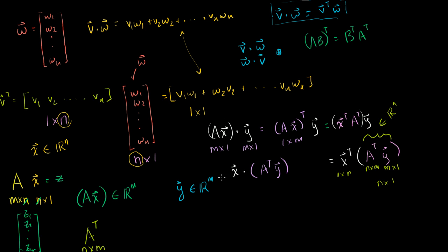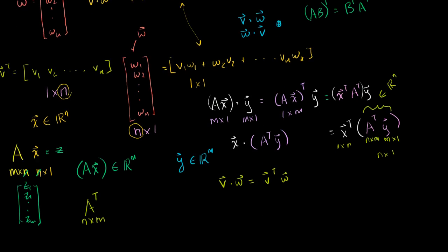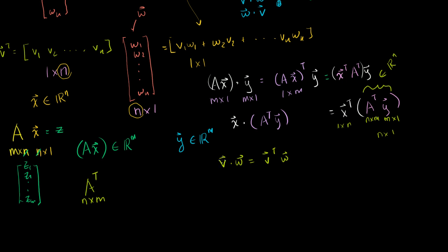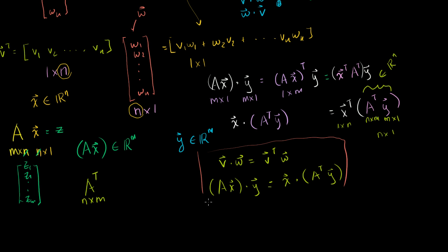So the two big outcomes of this video are: first, v·w equals the matrix product of v transpose times w. Second, if we have a matrix A and well-defined products, then Ax·y is equivalent to x·(A transpose·y). You're essentially moving A to the other vector but taking its transpose. This is a useful result we can build upon later in the linear algebra playlist.